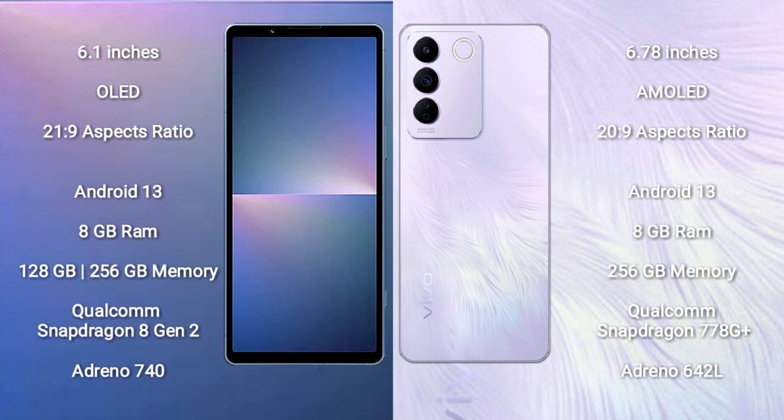Sony Xperia 5 Mark 5 features a Qualcomm Snapdragon 8 Gen 2 processor and GPU Adreno 740. VOV29 comes with 8GB to 12GB RAM and 128GB to 256GB internal storage.